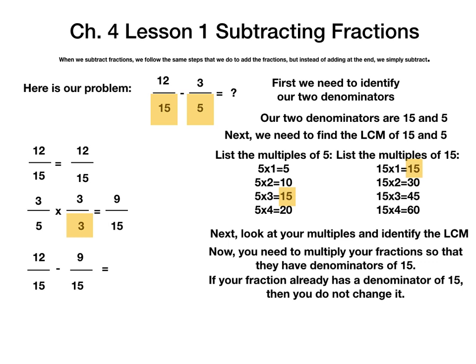Remember, when you add or subtract fractions, your denominator stays the same. So in this case, our denominator is going to stay 15. Now, we simply need to do 12 minus 9, which is 3. But we are not done.